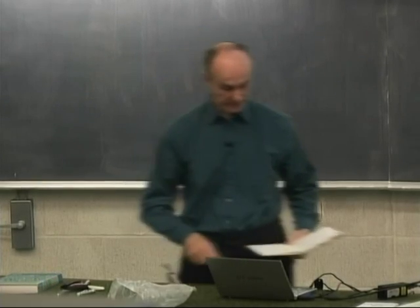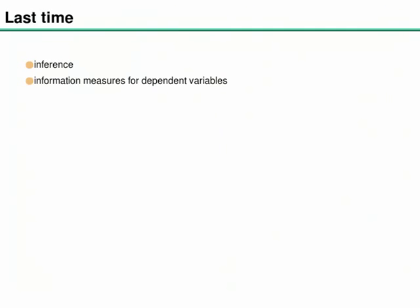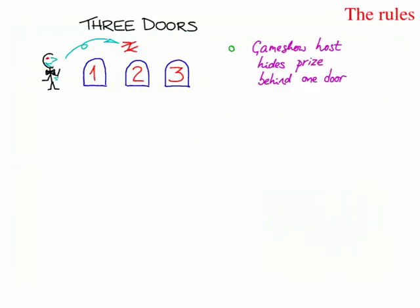Last time we discussed inference and information measures for a pair of dependent random variables. Let me recap those two topics fairly quickly. For inference, one of the examples I mentioned was the three doors problem.